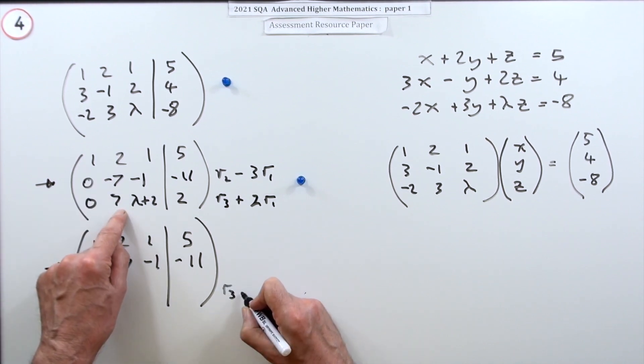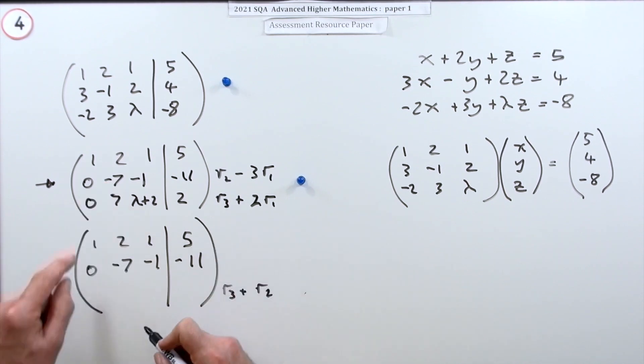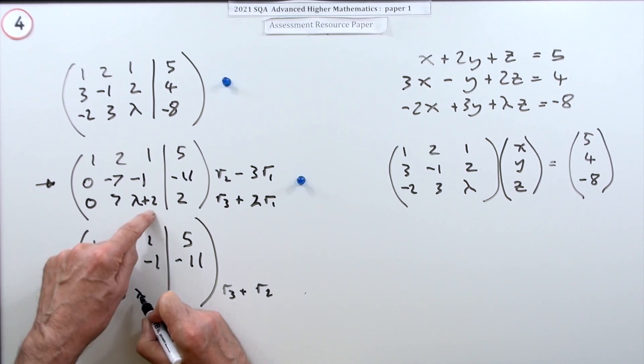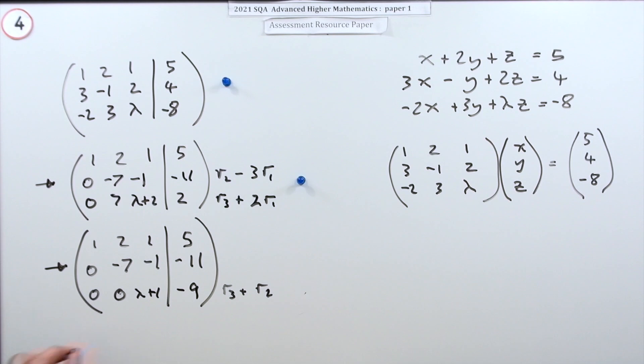So if you take your row three and replace it with row three plus row two, that should do it. So adding them together, zero, zero and two take away one, lambda plus one, negative nine. So getting it into upper triangular form is the final one.